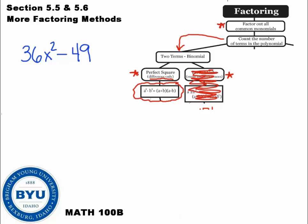We can follow the rules of factoring. We can say, hey, is there anything that factors out? Anything common? I don't see anything common here. So then we count the number of terms. We have two terms. So I say, hey, two terms. Is this a perfect square with subtraction? Well, 36 is a perfect square. The square root of 36x squared would be 6x.